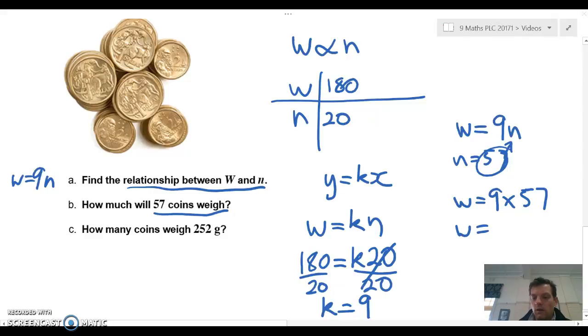We can pop that into our calculator. 9 times 57 equals 513. Now we need to be careful here in terms of what is 513. Well, we're asked to find the weight, and the unit of measure is grams, so 513 grams.